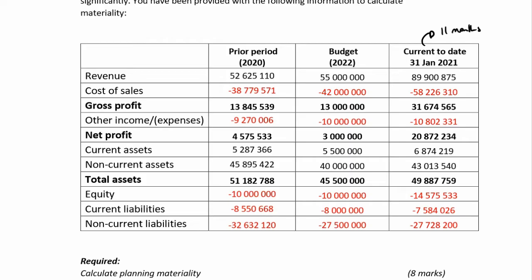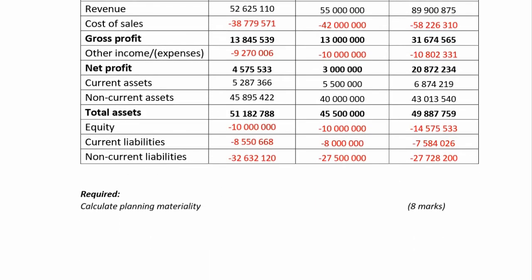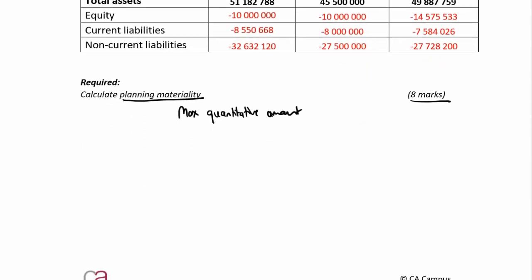The current year to date is for 11 months, because year end is 28 February. The requirement is to calculate planning materiality — 8 marks. Planning materiality is the maximum amount by which the financial statements could be misstated. The process: first choose your figures and justify them, then choose your benchmark and justify it, then calculate your range, and finally conclude.